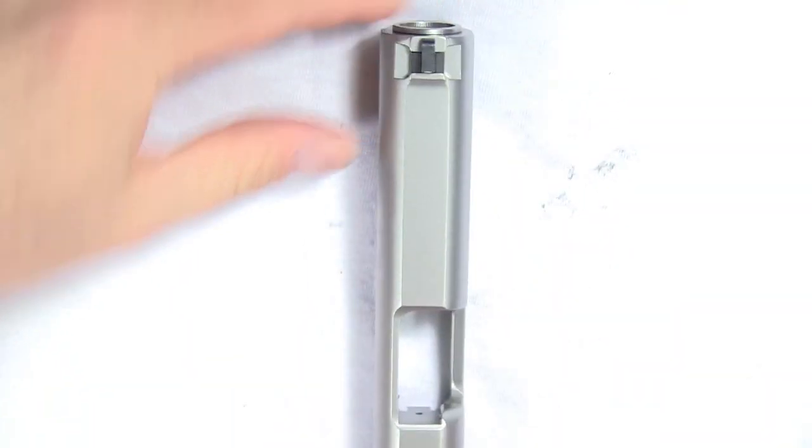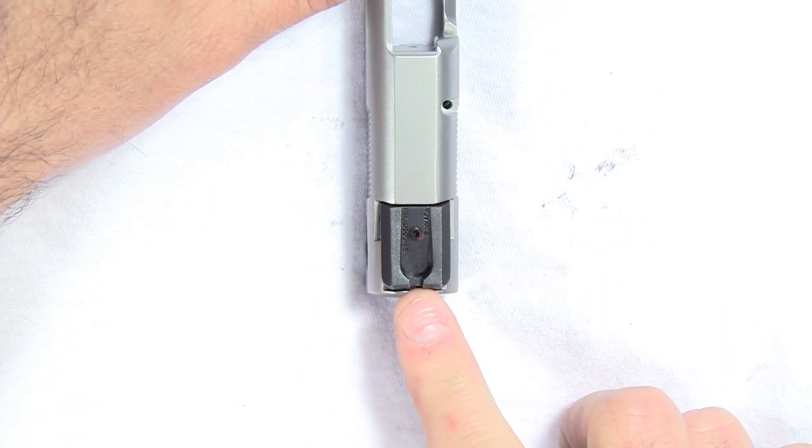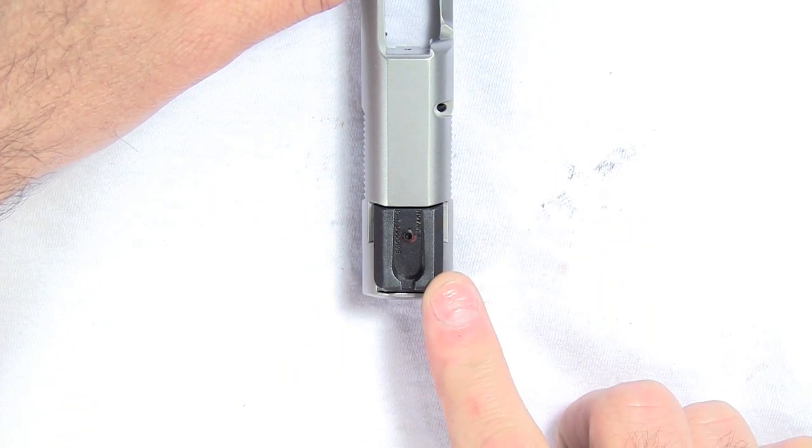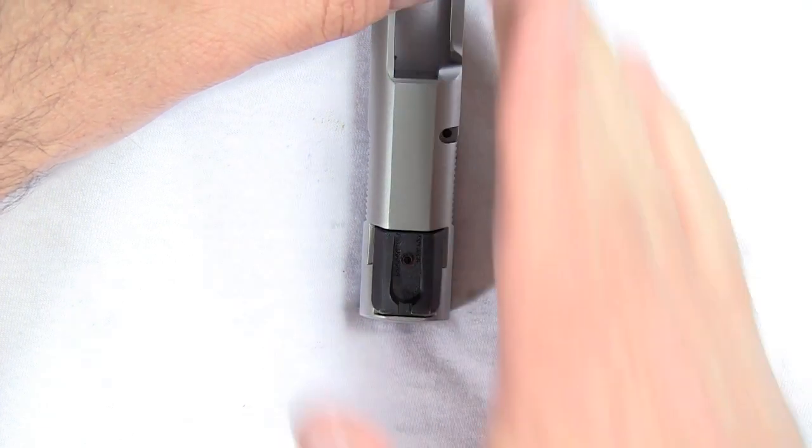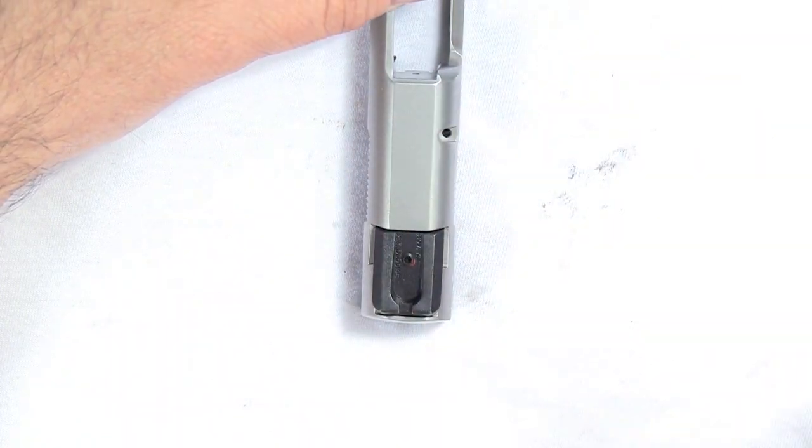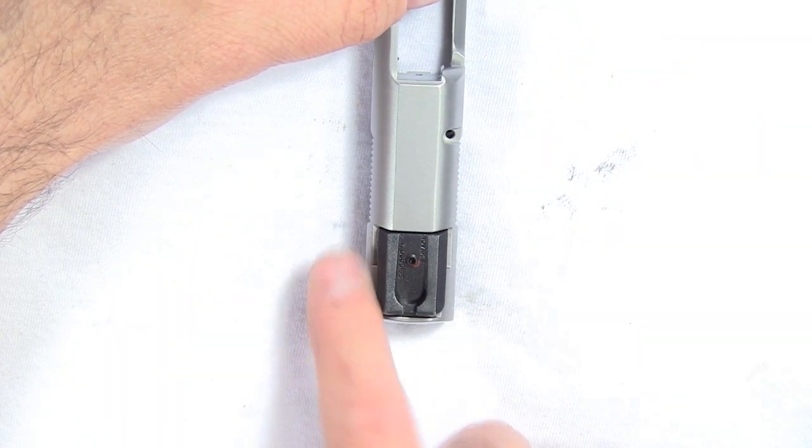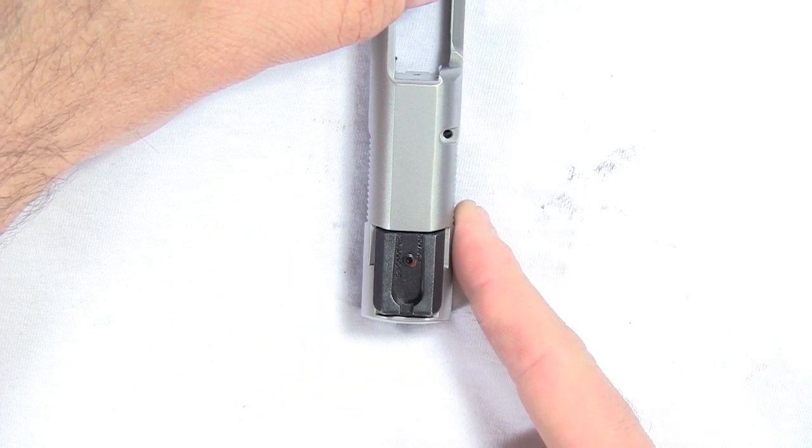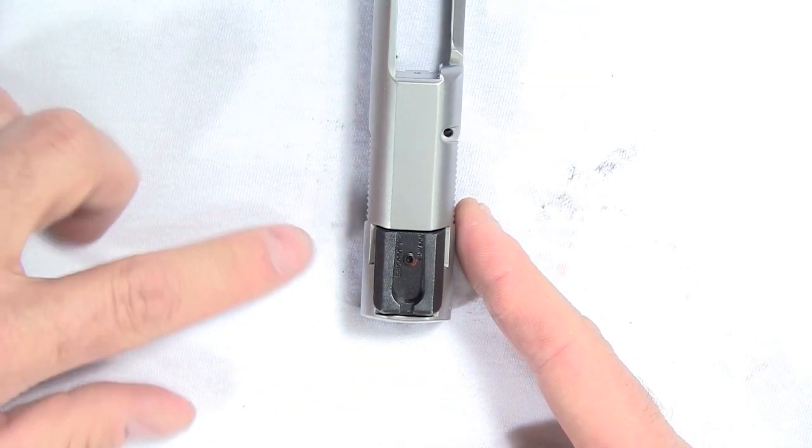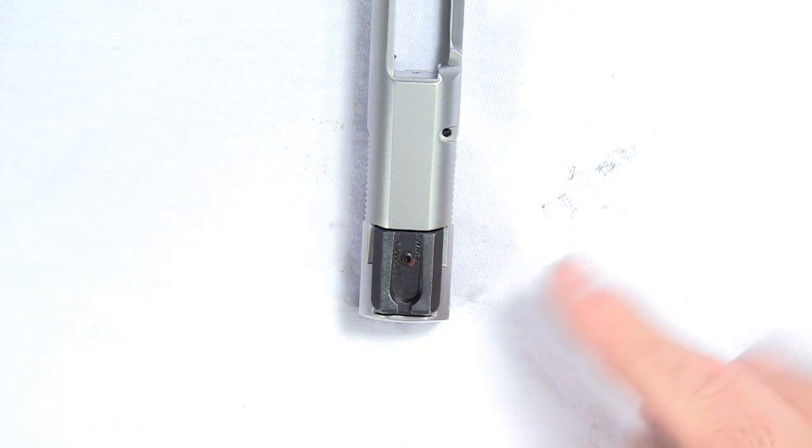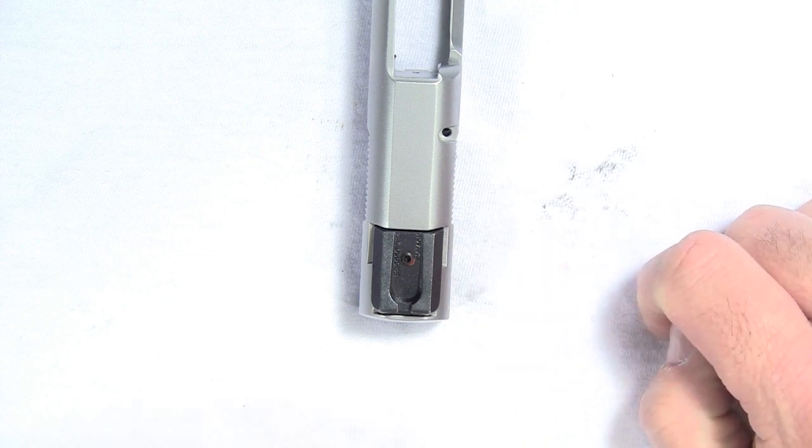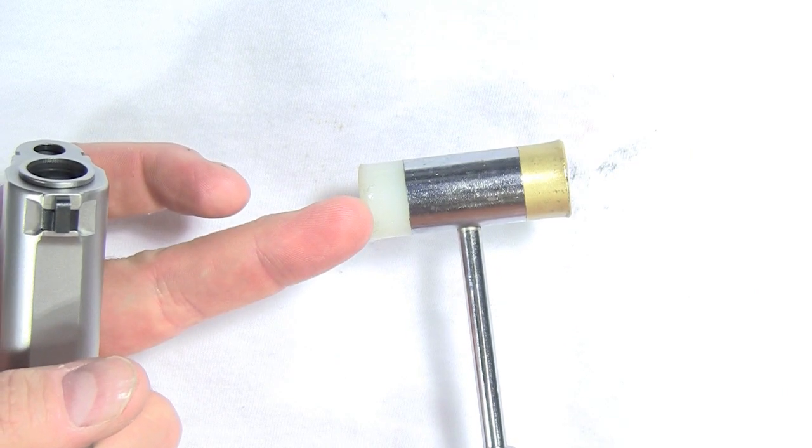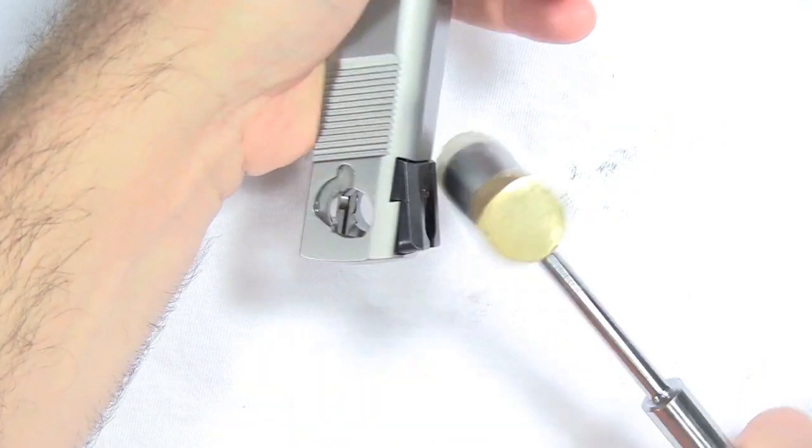A lot of guys want to use a sight pusher, which is not necessary on these. If you get the slide and the sight soaked really good with liquid wrench or Kroil, it will loosen up any corrosion or rust under it. Then you should be able to pound it out. Whether it's the front dovetail or the rear slide, whether it's a Novak style or adjustable sights, they always will be pushed off to the right when you're looking down the gun from the shooting position. The sight always is installed from the right side and is always removed towards the right side.